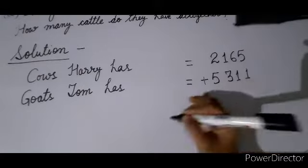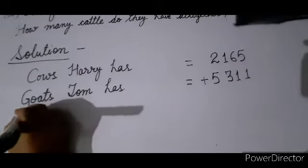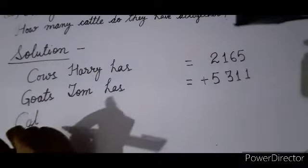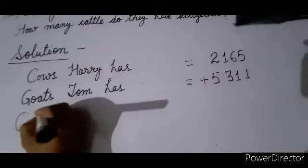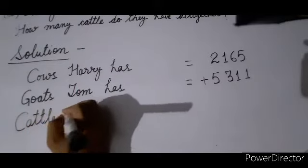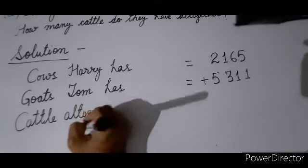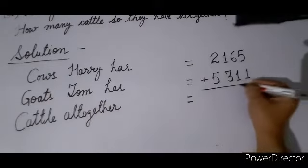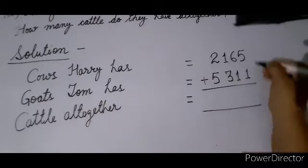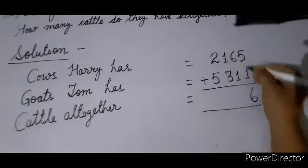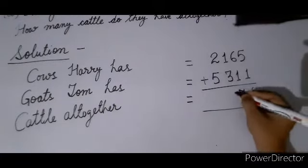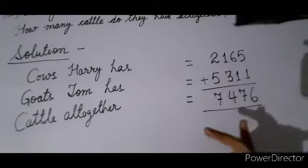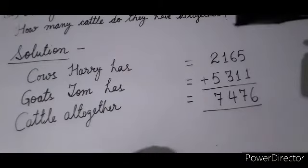Write the plus sign — it is compulsory so that it is clear you need to add. Then third line: write 'cattle' because cattle is mentioned here — both cow and goat come under cattle. Write 'cattle all together', then equal sign below equal. Draw a horizontal line and add: 5+1=6, 6+1=7, 3+1 carry 1, 1+3=4, 2+5=7. The answer is 7476.